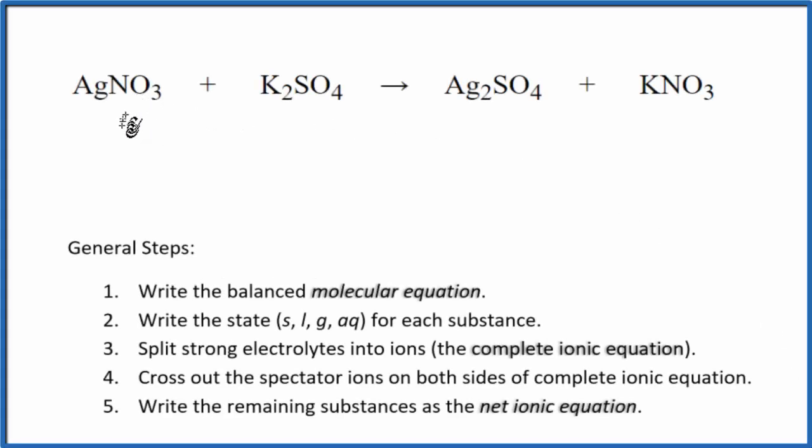In this video, we'll write the balanced net ionic equation for AgNO3 plus K2SO4. This is silver nitrate and this is potassium sulfate. First thing we need to do is balance the molecular equation. This is our molecular equation.